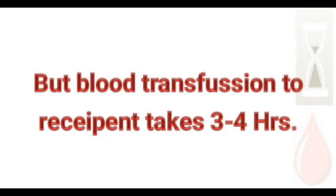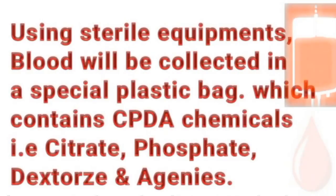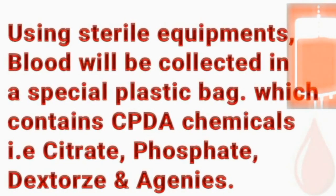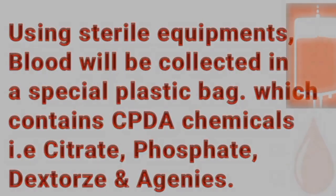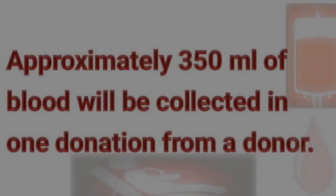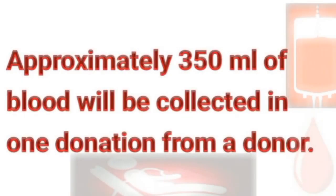Blood transfusion to a recipient takes 3 to 4 hours. Using sterile equipment, blood will be collected in a special plastic bag which contains CPDA chemicals — citrate, phosphate, dextrose, and adenine. Approximately 350 ml of blood will be collected in one donation from a donor.